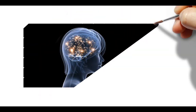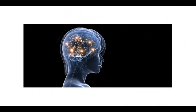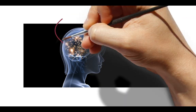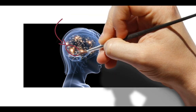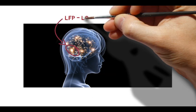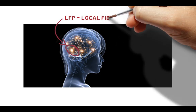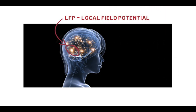The activity from a single neuron is far too small to be detected with EEG equipment. But when thousands or tens of thousands of neurons work in concert, we're in business. An area or group of neurons working in concert is called an LFP, or local field potential.